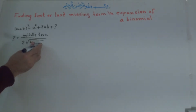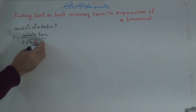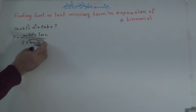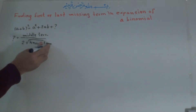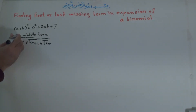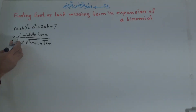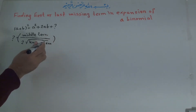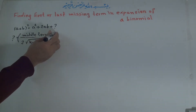The known term means the term that we know — like this one. After this, we make this result a square.